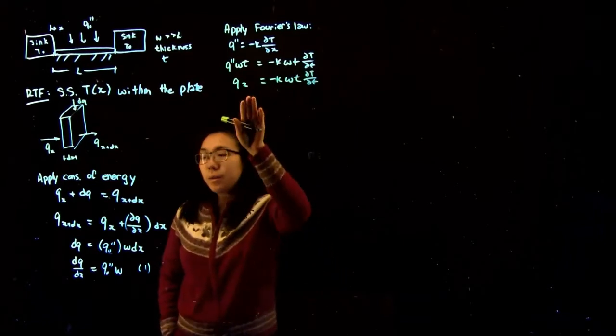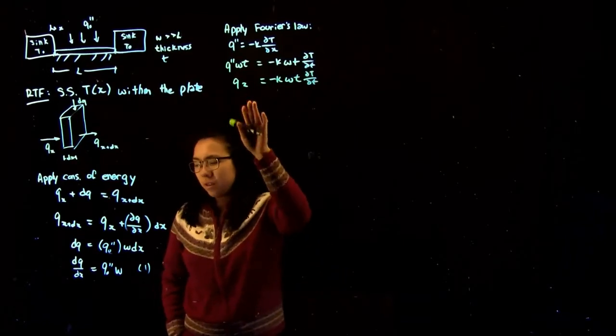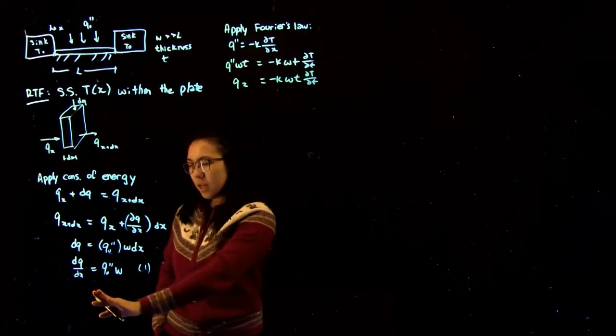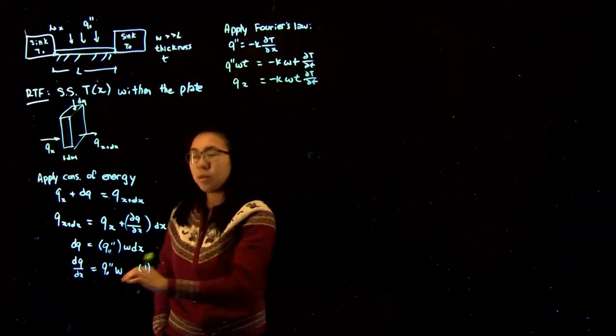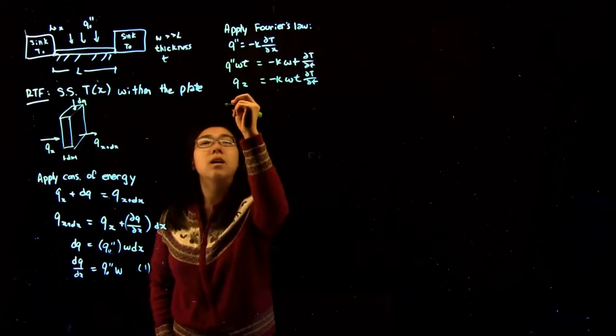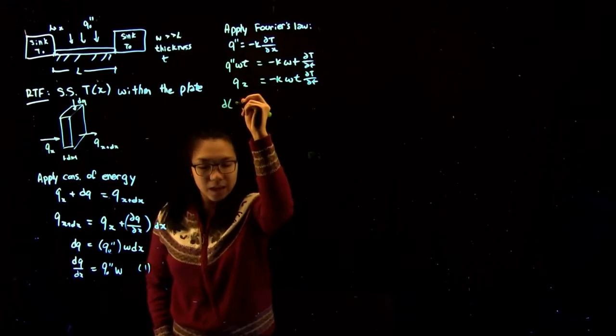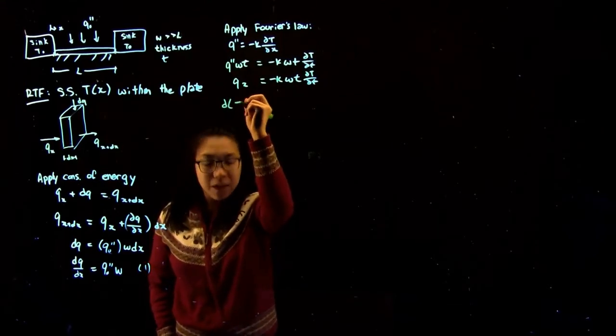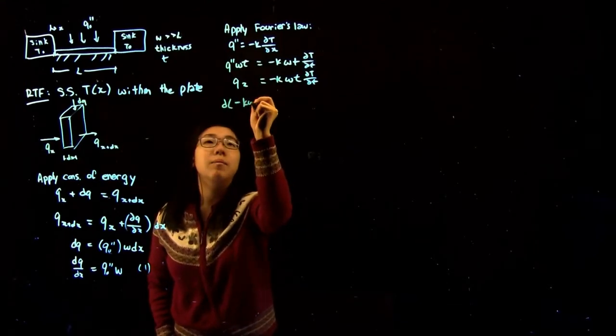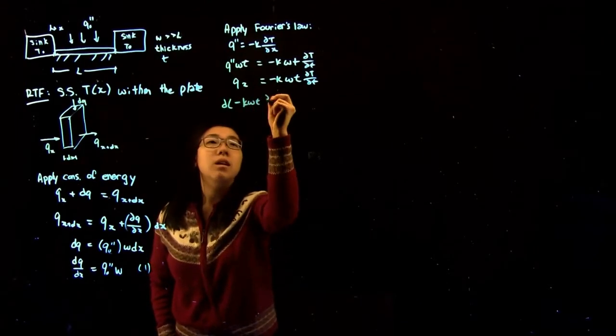Now we can substitute this into the energy balance. We get d/dx of (minus K Wt times dT/dx)